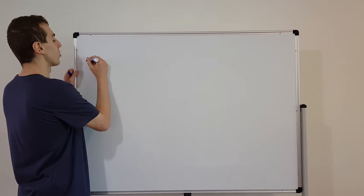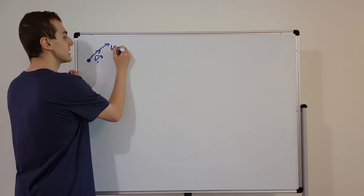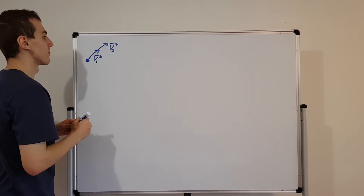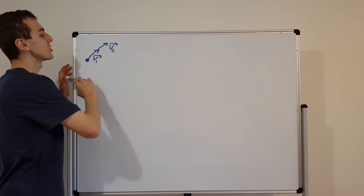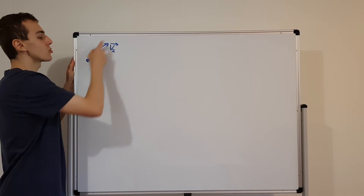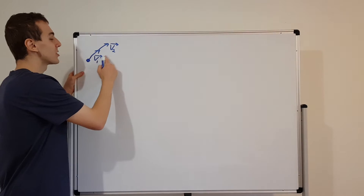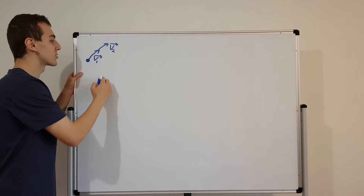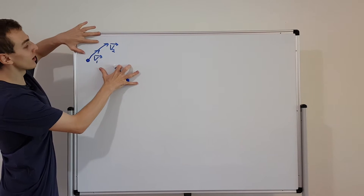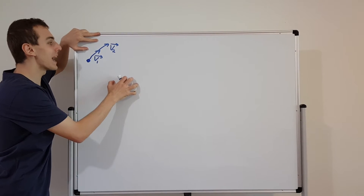Let's say you have two vectors, V1 and V2. You can see that V1 and V2 have the same span — they are on top of each other, pointing in the exact same direction. If you wanted to construct any other vectors from these two, you'd be limited to just the line that passes through them. So all the other vectors out here would be completely missed, because they're not in the span of these two vectors.